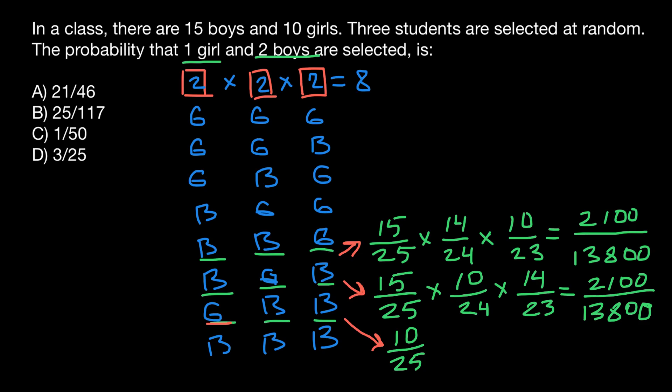So to choose the second boy, we would have a probability: now we have 24 people left, and we have 15 boys, so the probability would be 15 boys out of 24. And the last probability to choose a boy: we have 14 boys left and the total number of people is 23. So again, we are going to get the same number: 2,100 over 13,800.